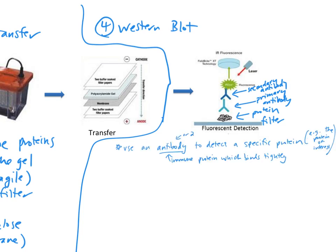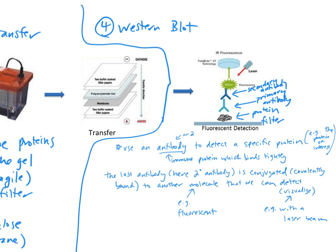An antibody is used to detect a specific protein — the protein of interest. Each protein needs to have its own antibody. An antibody is an immune protein which binds tightly and highly specifically to proteins of interest. The secondary antibody is conjugated — covalently bound — to a fluorescent molecule, which produces light when hit with a certain frequency like a laser beam. That's something we can detect or visualize using a particular microscope or camera. And that is the end of the steps of the Western blot.